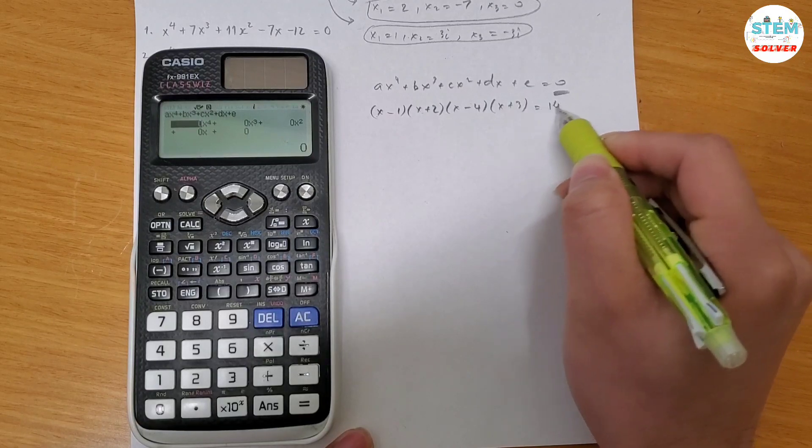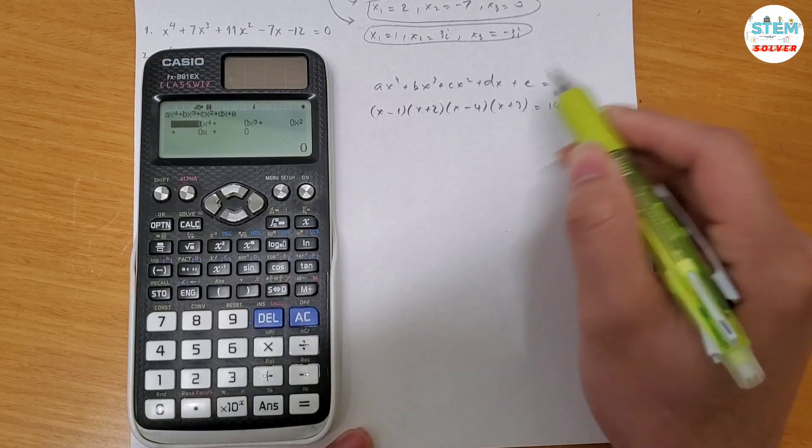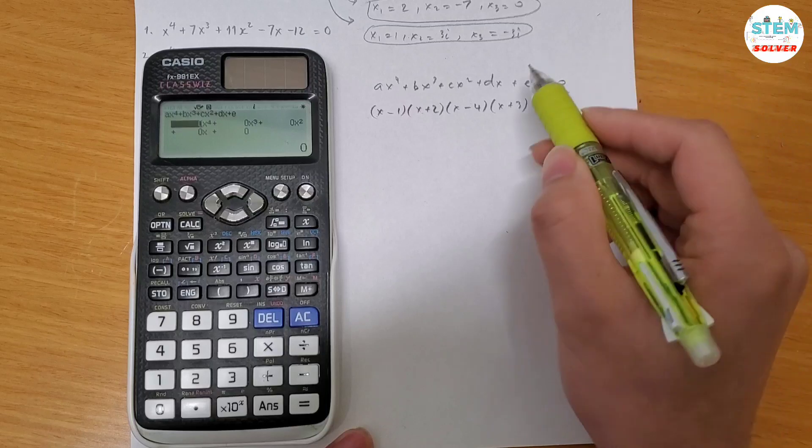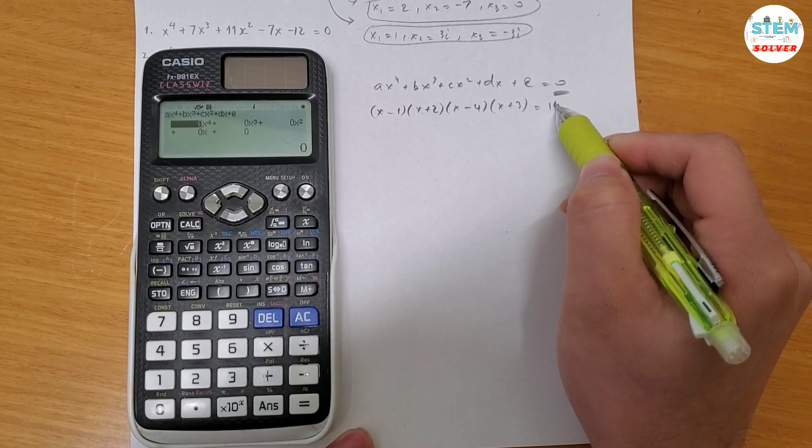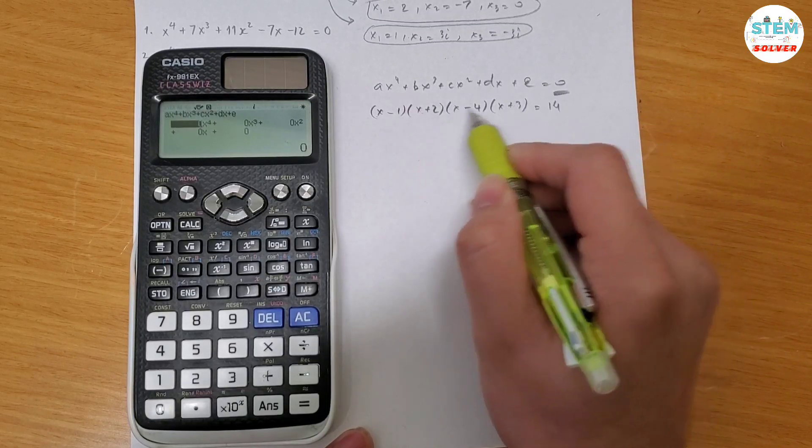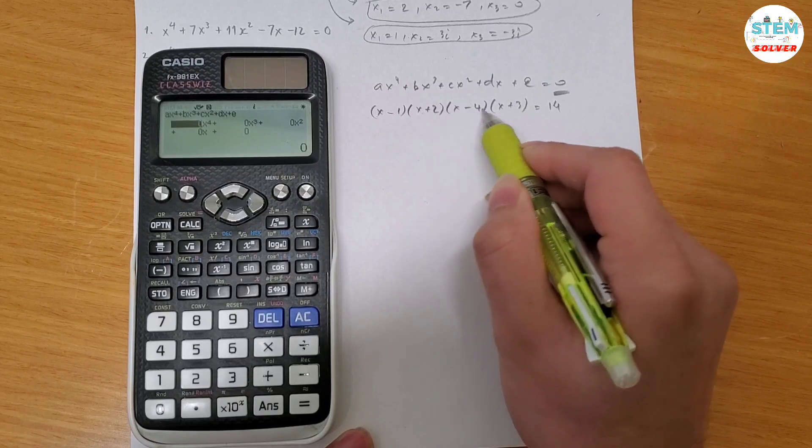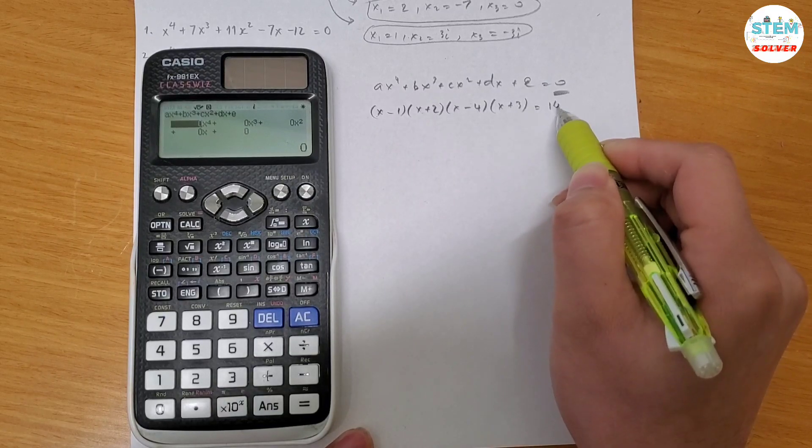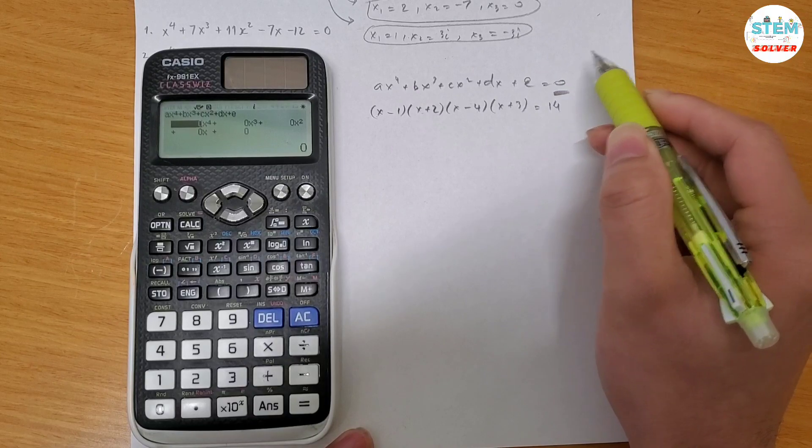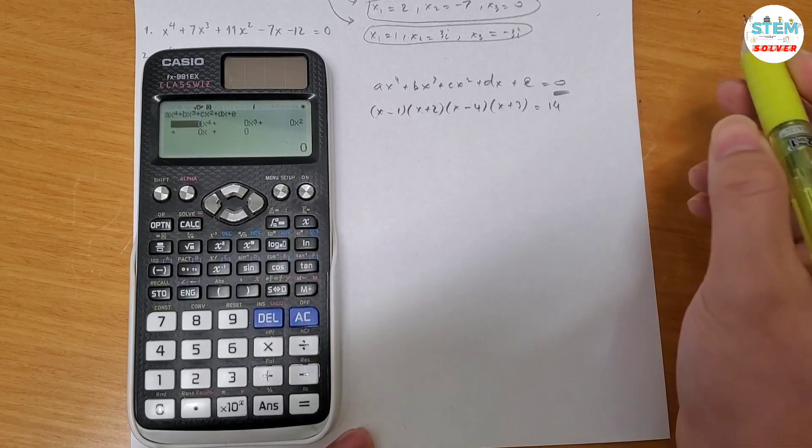So get rid of this 14 by subtracting, adding, do the calculation to get the constant e. So this 14 goes into this constant and you add all of these constants. So negative 1 times 2 times negative 4 times 3 add minus 14. On the right side has to be 0. Otherwise this method won't work.